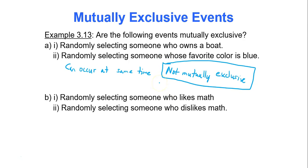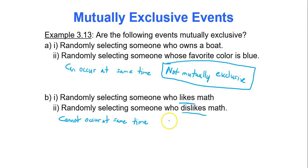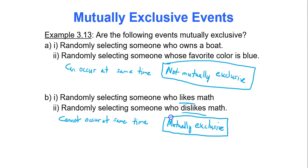In example B: randomly selecting someone who likes math and randomly selecting someone who dislikes math. Can someone both like and dislike something at the same time? At any instantaneous moment in time, the answer is no — so they cannot occur at the same time. Therefore these events are mutually exclusive or disjoint.